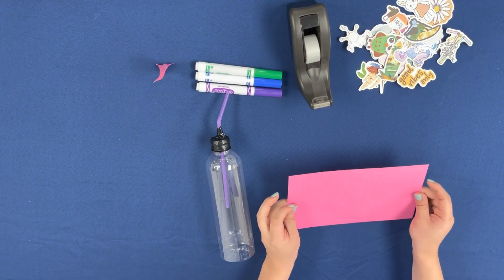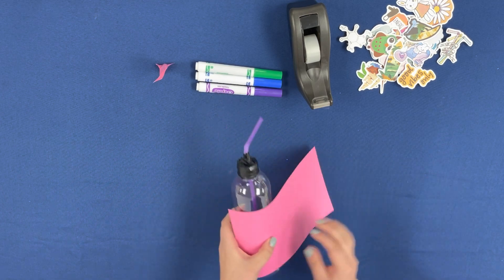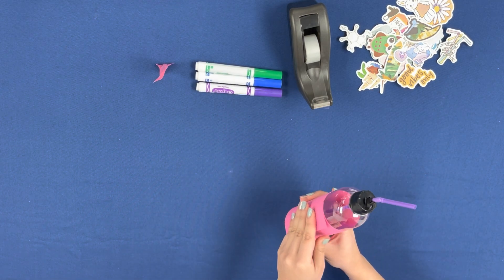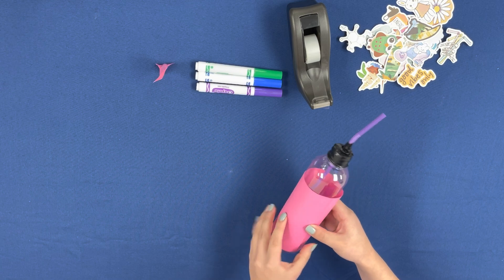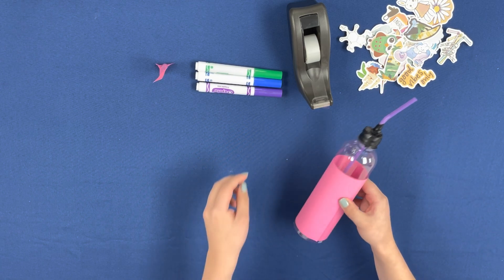Using the construction paper from before, I cut out a rectangle. You want to make sure your rectangle is small enough to fit your bottle towards the bottom a little like this.